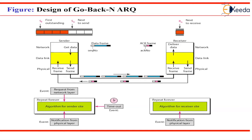The receiver does not have to acknowledge each frame individually; it can send cumulative acknowledgement for several frames. When the timer expires, the sender resends all outstanding frames. For example, suppose the sender has already sent frame 6 but the timer for frame 3 expires — this means frame 3 has not been acknowledged. The sender goes back and sends frames 3, 4, 5, and 6 again. That is why the protocol is called Go Back N ARQ protocol.